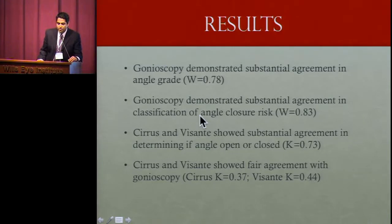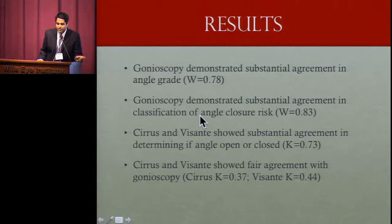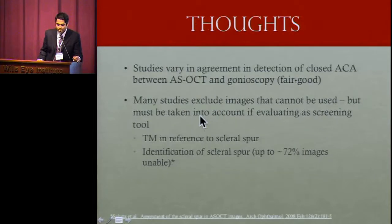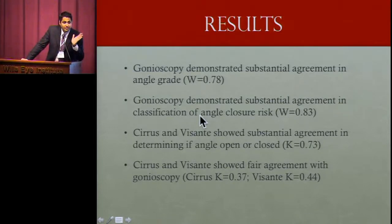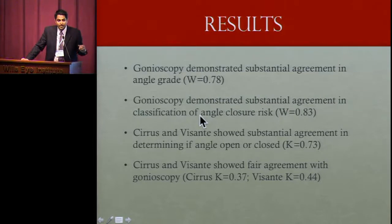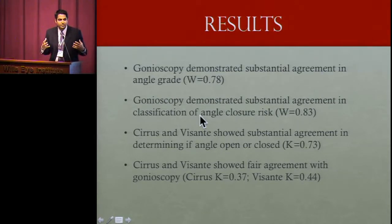In summary, gonioscopy demonstrated substantial agreement in angle grade and in classification of angle closure risk among examiners. The two imaging modalities agreed with each other very well, but comparing Cirrus and Visante to gonioscopy showed only fair agreement. That fair-agreement data includes the non-identifiable images — excluding those, agreement would likely go up quite a bit. But for screening large populations, it's important to understand what percentage of images can't be used due to image quality or artifact.